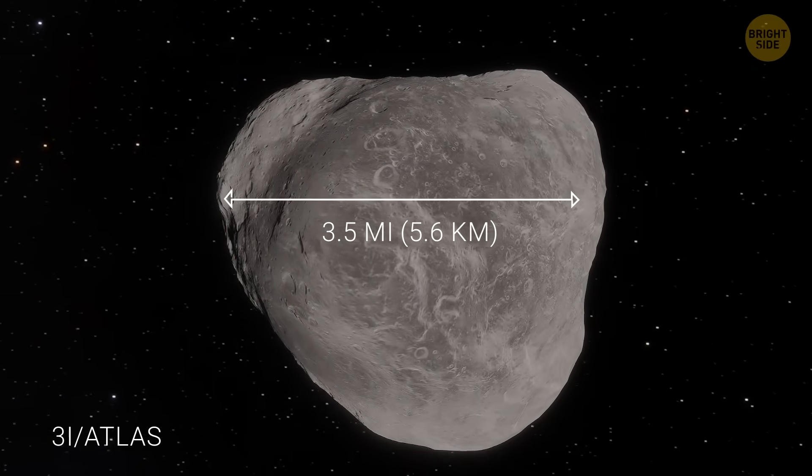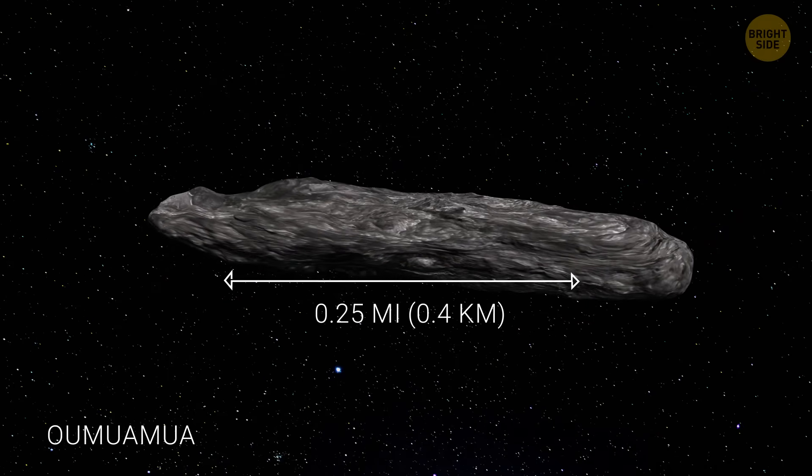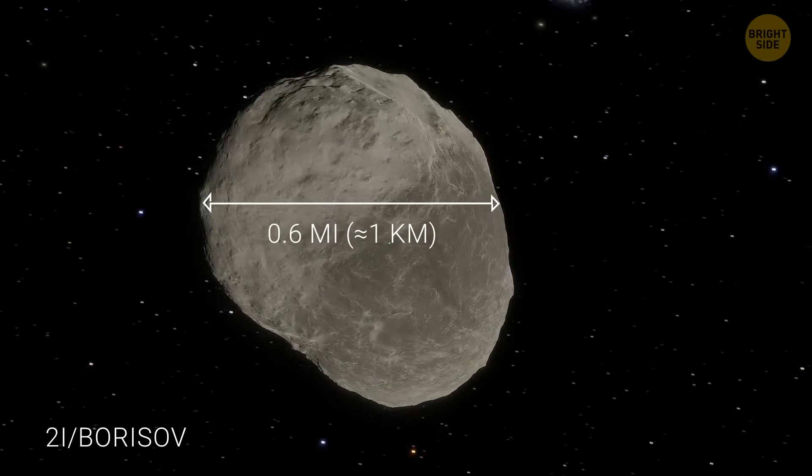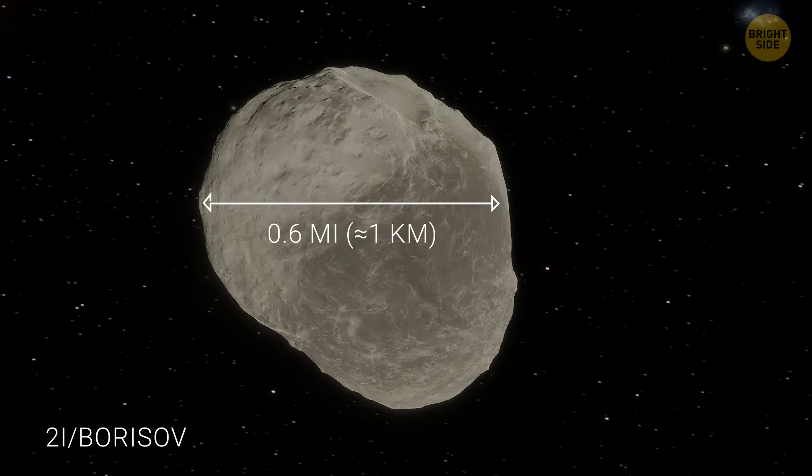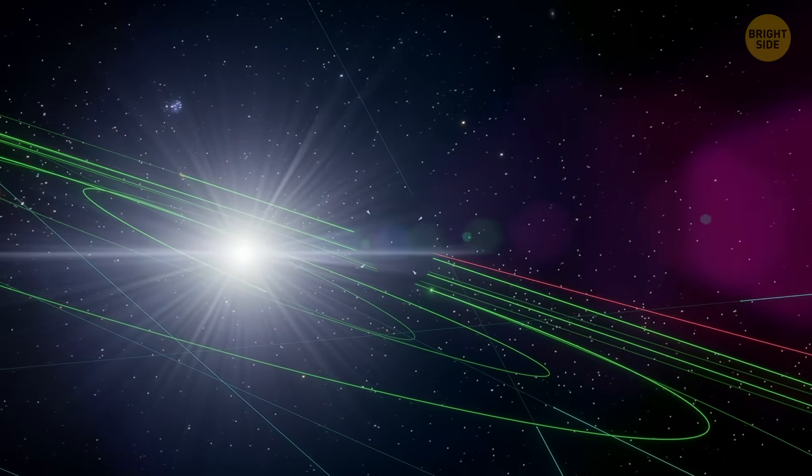Its nucleus is up to 3.5 miles wide, while Oumuamua was only about a quarter mile long, and Borisov was around a half mile across. Besides being huge, 3I Atlas is unusual in several other ways.